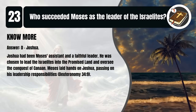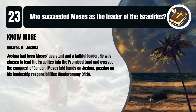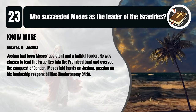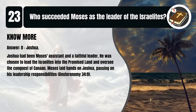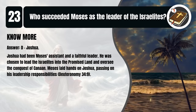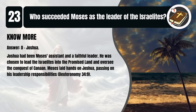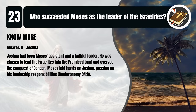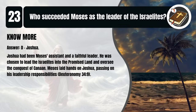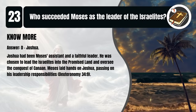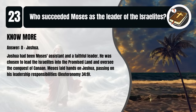That's D. Joshua. Joshua had been Moses' assistant and a faithful leader. He was chosen to lead the Israelites into the promised land and oversee the conquest of Canaan. Moses laid hands on Joshua, passing on his leadership responsibilities. Deuteronomy 34:9.